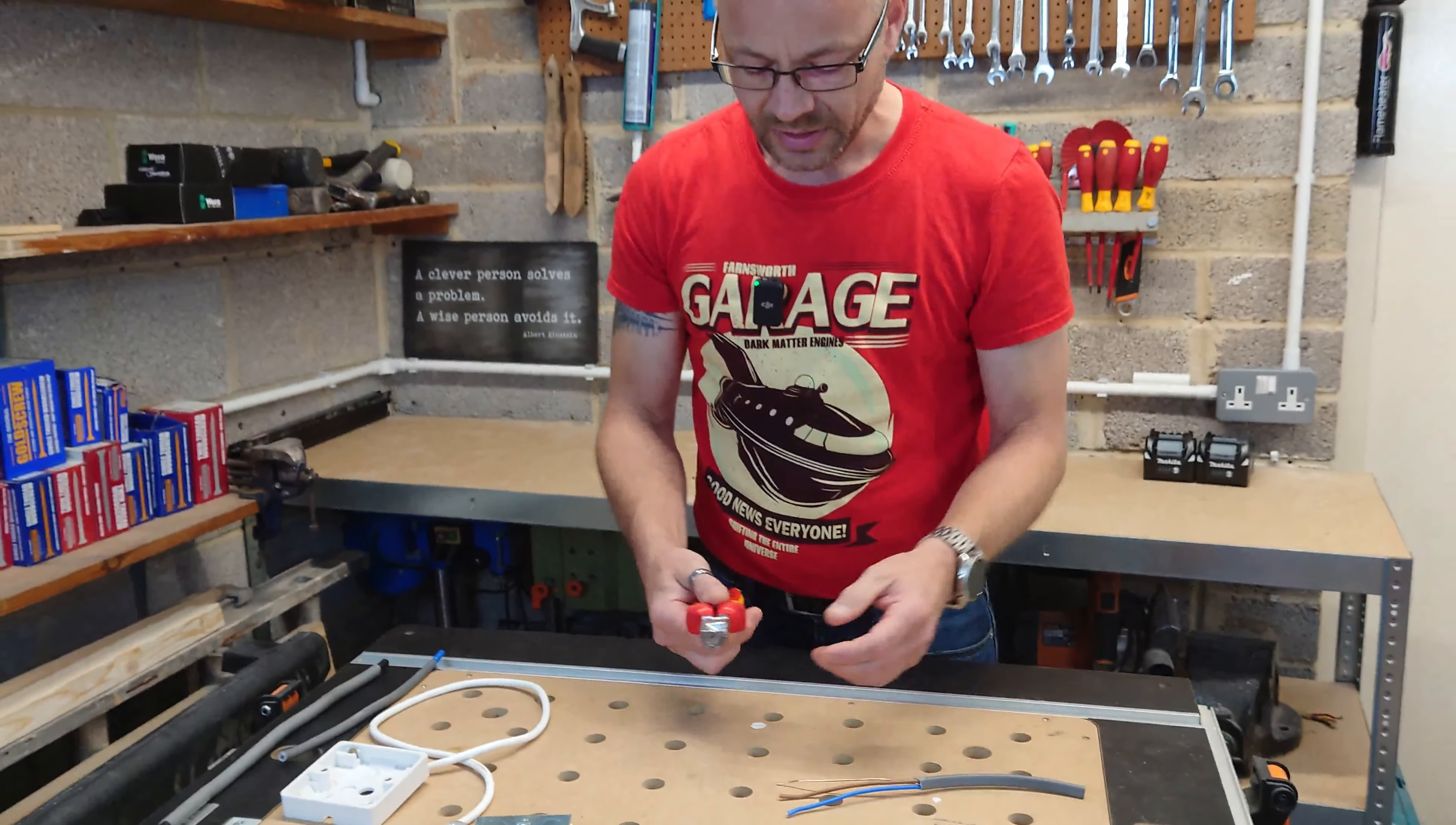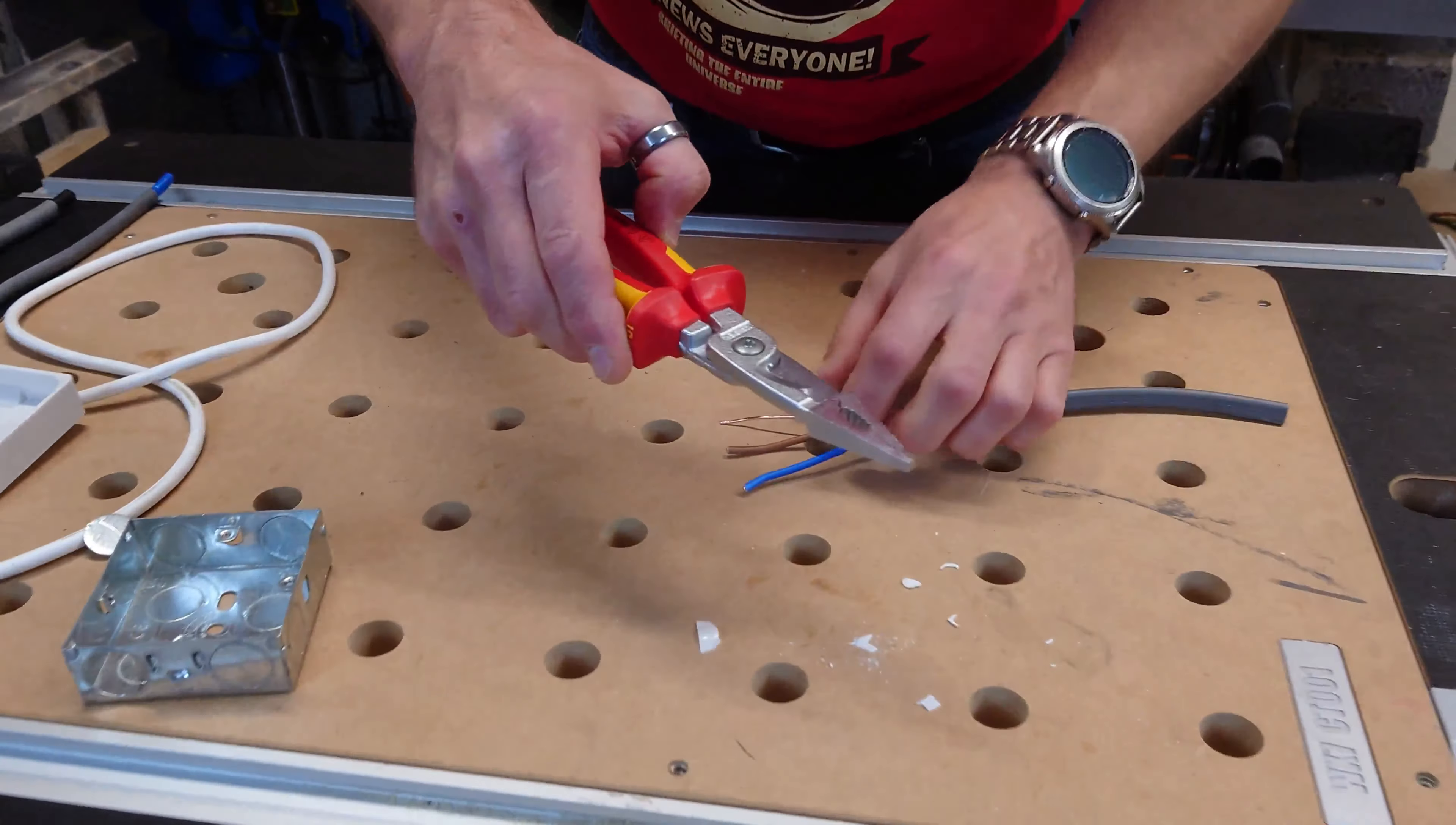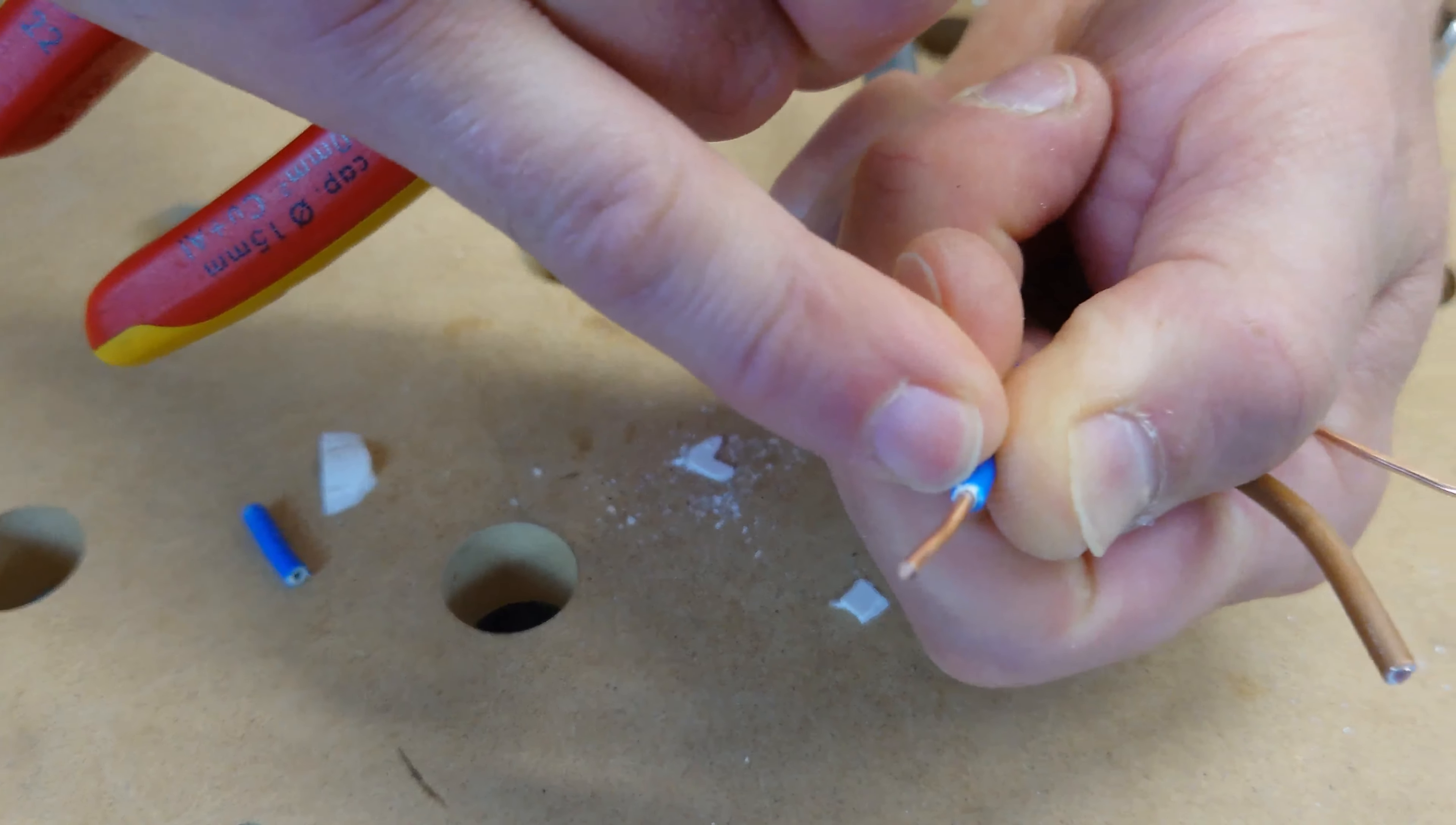There are wire strippers on here, rated from 0.7 millimeters all the way to 2.5. A piece of 2.5 twin and earth here, really is that simple. And no damage to the copper core whatsoever.